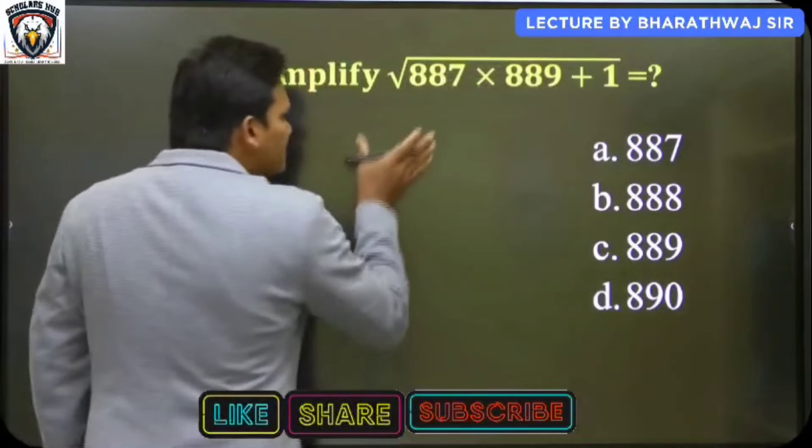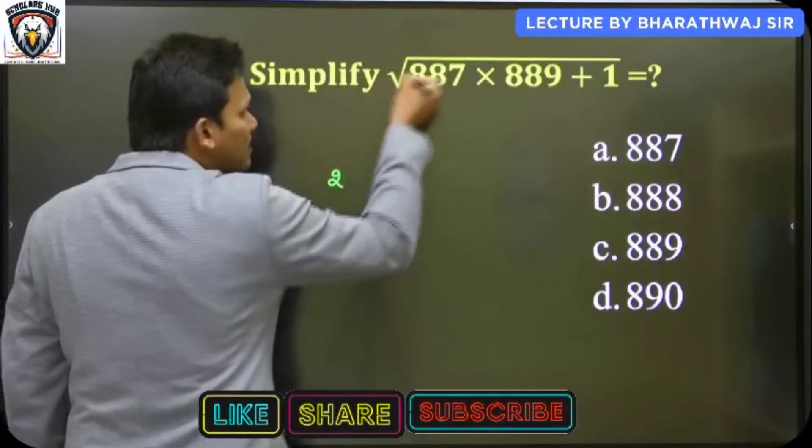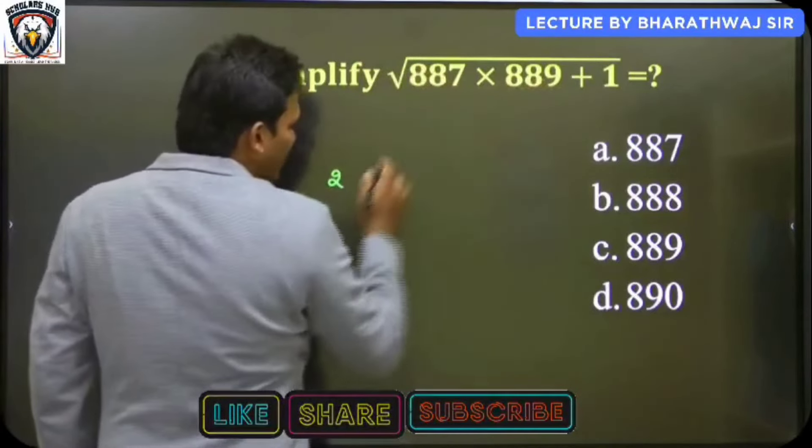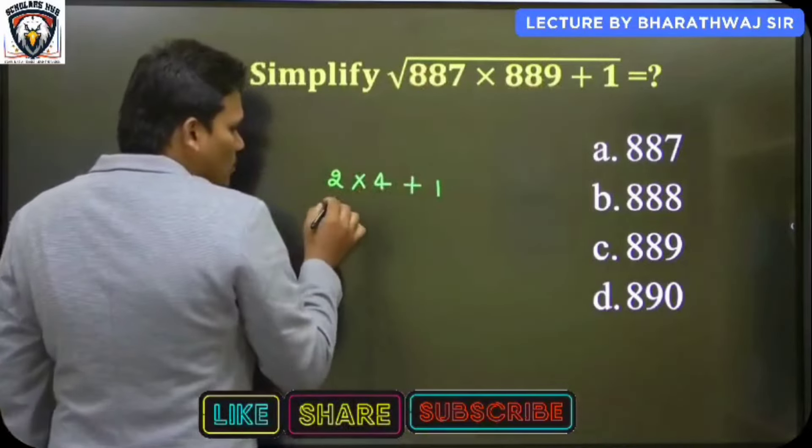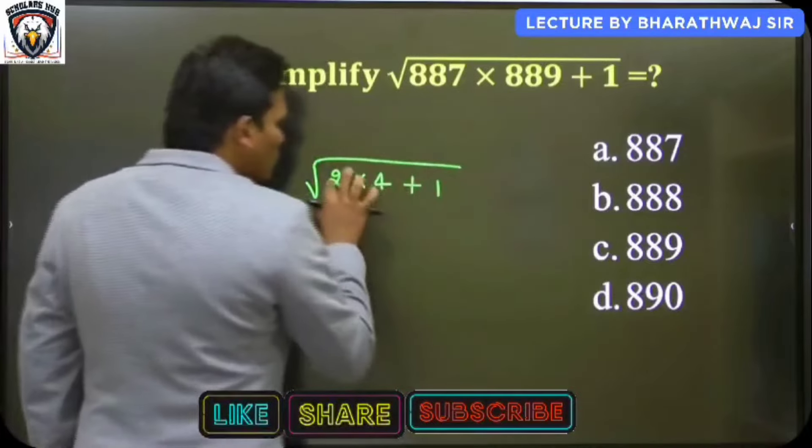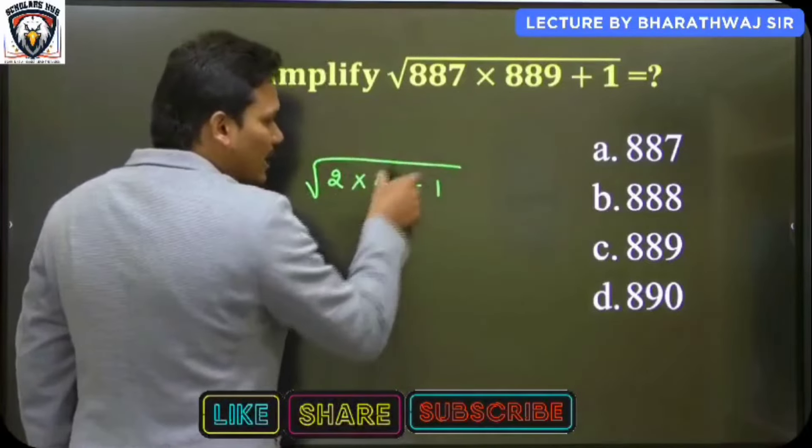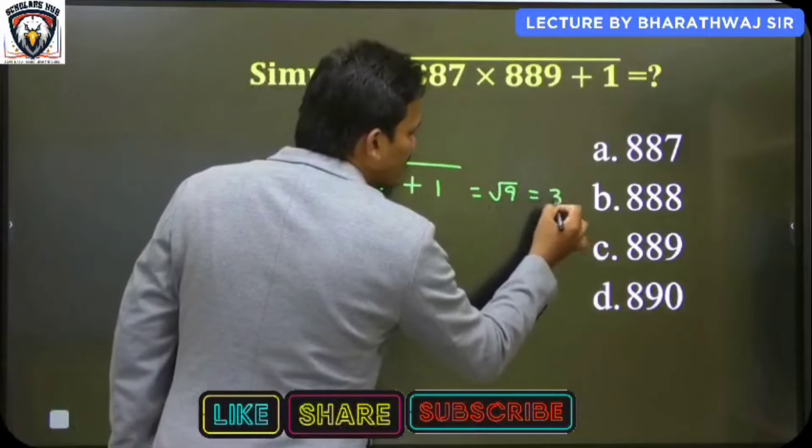In the same way, we'll consider 887 as 2. We are going to replace this as 2 and 889 as 4, and I'm adding plus 1. So here one number is missing in between these two numbers, and we apply root. So 2 times 4 is how much? 8. So 8 plus 1 is how much? 9. So root 9 value equals 3.